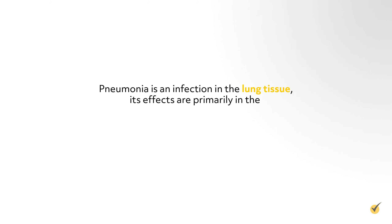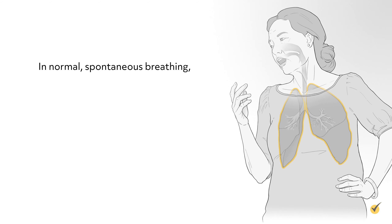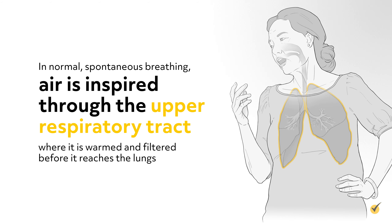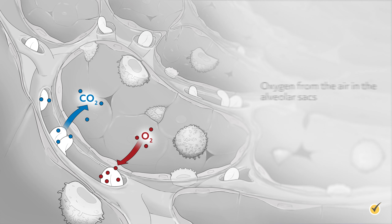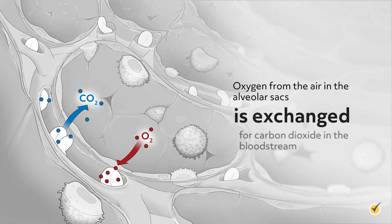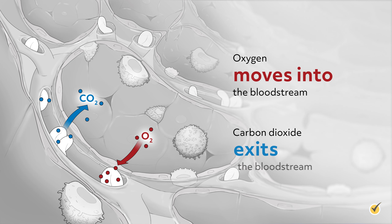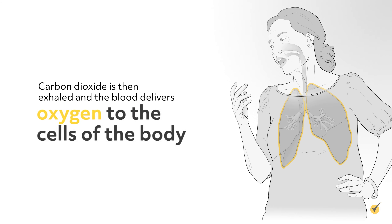Because pneumonia is an infection in the lung tissue, its effects are primarily in the respiratory system, although there may be widespread effects as well. In normal, spontaneous breathing, air is inspired through the upper respiratory tract, where it is warmed and filtered before it reaches the lungs. Air travels through the trachea, bronchi, and bronchioles before it reaches the alveoli, where gas exchange occurs. Oxygen from the air in the alveolar sacs is exchanged for carbon dioxide in the bloodstream at the alveolar or pulmonary capillary wall. Oxygen moves into the bloodstream and carbon dioxide exits; it is then exhaled and the blood delivers oxygen to the cells of the body.